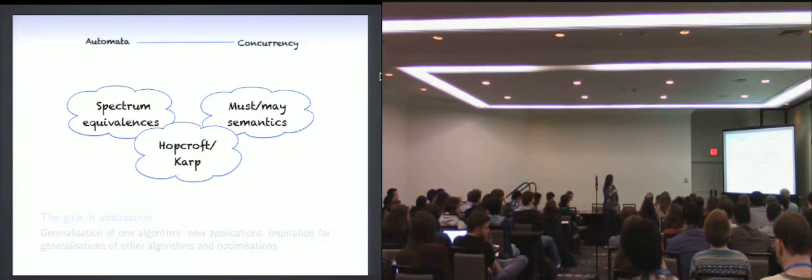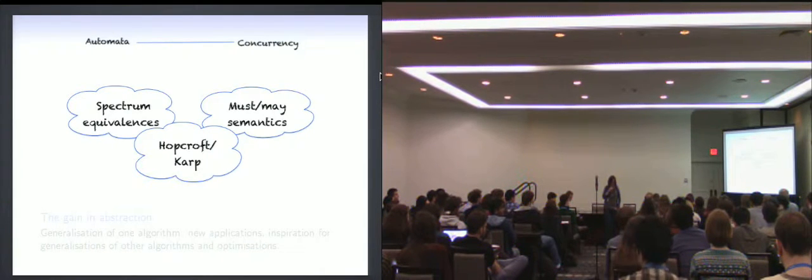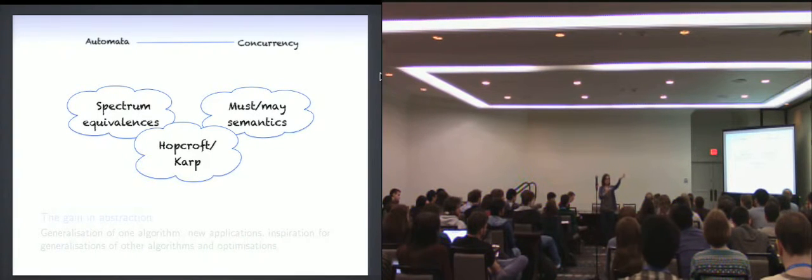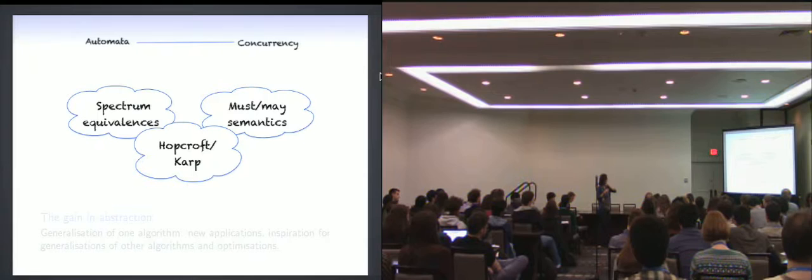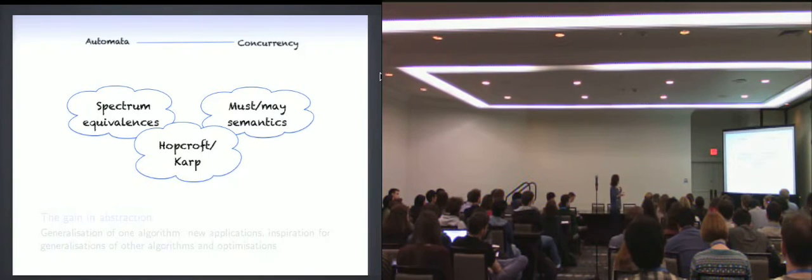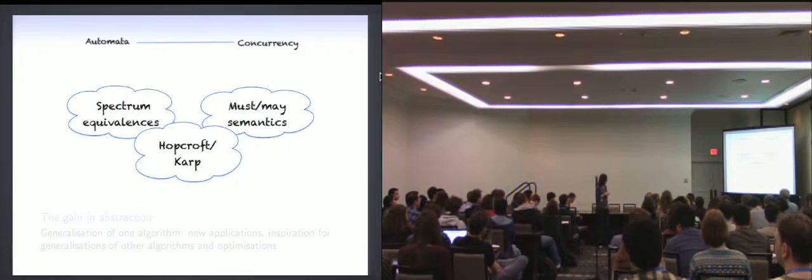So this generalization to Moore automata, we've used it to make some connections to some work in concurrency theory in must and may semantics. And to capture something that's called in concurrency theory, the Van Glabbeek spectrum. But more interestingly, so that paper I mentioned from POPL 13 on the observation for non-deterministic automata that allowed them to improve the original algorithm by Hopcroft and Karp. That paper was also developed from a co-algebraic perspective. And then the fact that we had these two works developed from the same perspective, actually allowed us to connect both and get an even more efficient algorithm.